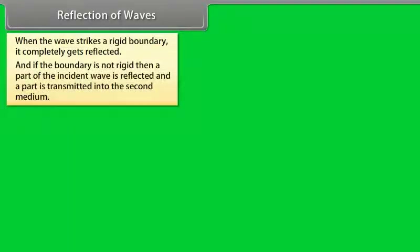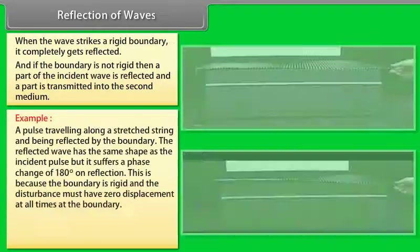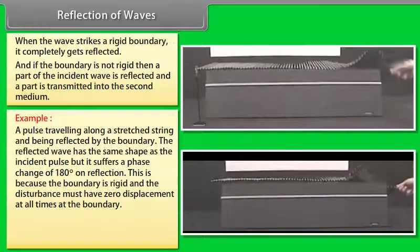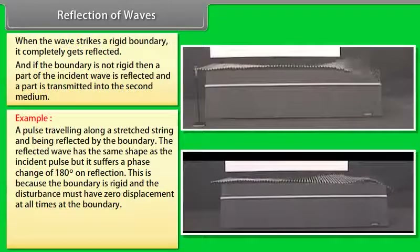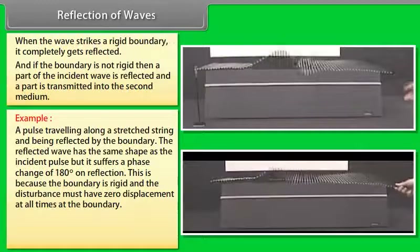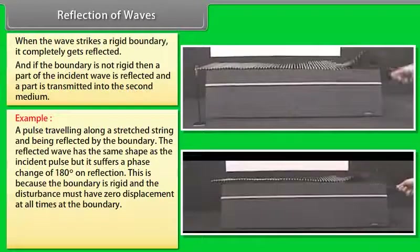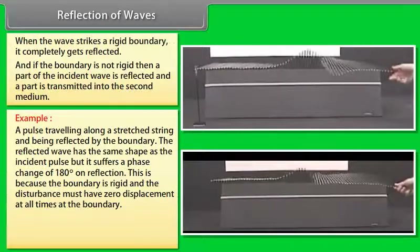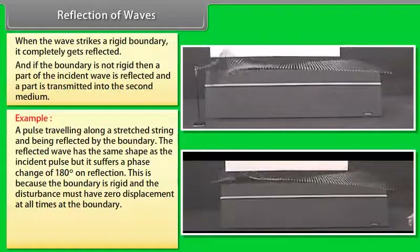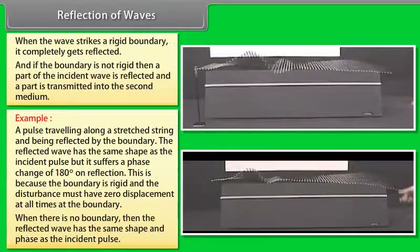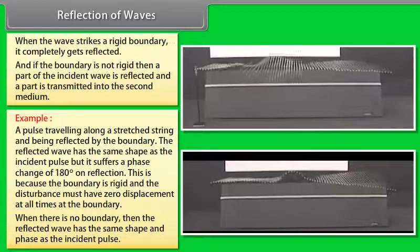Reflection of waves: When a wave strikes a rigid boundary, it completely gets reflected. If the boundary is not rigid, then a part of the incident wave is reflected and a part is transmitted into the second medium. A pulse traveling along a stretched string and being reflected by the boundary has the same shape as the incident pulse, but it suffers a phase change of 180 degrees on reflection. This is because the boundary is rigid and the disturbance must have zero displacement at the boundary at all times. When there is no rigid boundary, the reflected wave has the same shape and phase as the incident pulse.